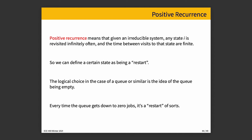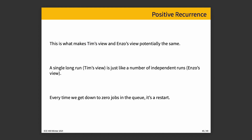Positive recurrence says that given an irreducible system, any state i is revisited infinitely often and the time between visits to that state are finite — assuming it's running for an infinite time. You could define a particular point as being a restart. The logical choice in the view of a queue is the idea of the queue being empty. Every time the queue gets down to zero jobs, it's the same as if you start it up. Because if the queue has nothing in it every time you get it down to zero, you could treat it as exactly the same as having just started.